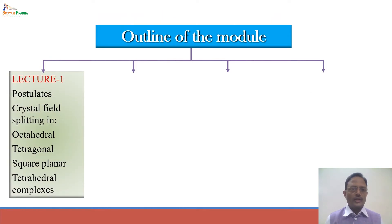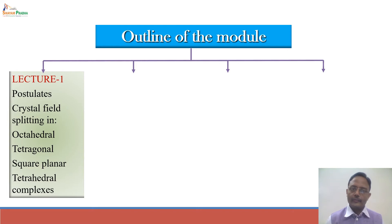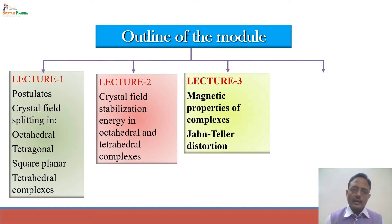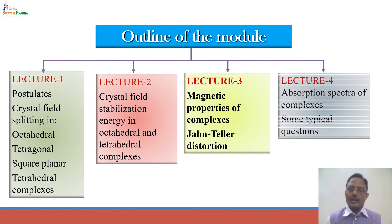In the first lecture we discussed the postulates and the Crystal Field Splitting in various geometries of complexes like octahedral, tetrahedral, tetragonal and square planar. In the second lecture we covered Crystal Field Stabilization Energy and how to calculate it in various types of complexes. In this lecture we are discussing magnetic properties of complexes and Jahn-Teller distortion. In the fourth lecture we will cover absorption spectra and some typical questions based on the entire Crystal Field Theory.